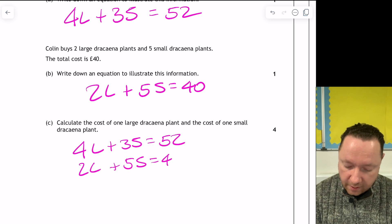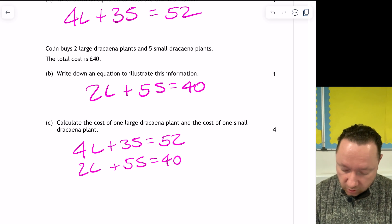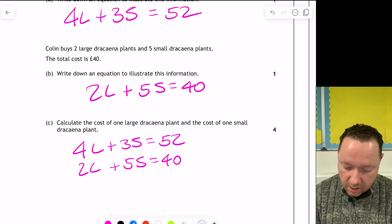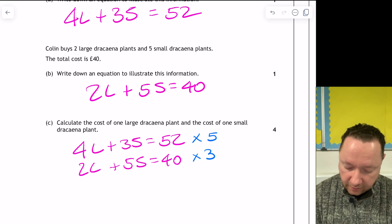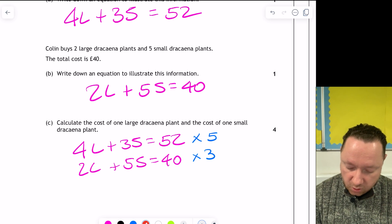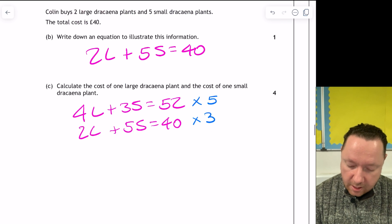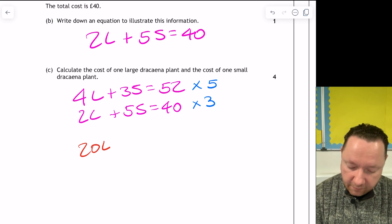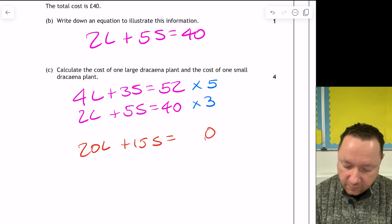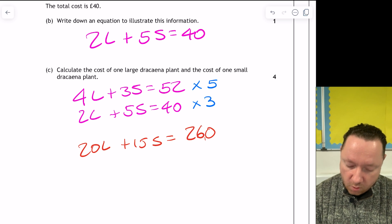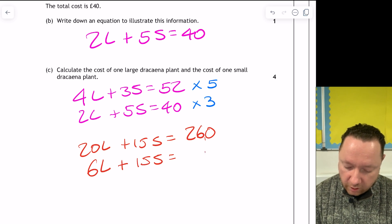So we're doing simultaneous equations to calculate the cost of 1 large and 1 small dracaena plant. So I'll write my equations again, one above the other, in the standard way. And then we need to eliminate either the L or the S. I always pick the second letter. So I times the top one by 5 and the bottom one by 3 to make 15. So I've got 5 times 4 is 20L, 5 times 3 is 15S, and 5 times 52 is 260. The bottom one, 3 times 2 is 6L, 3 times 5 is 15S, and 3 times 40 is 120.